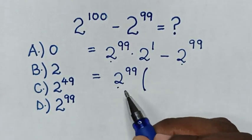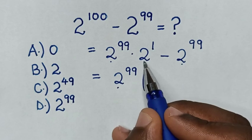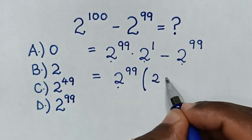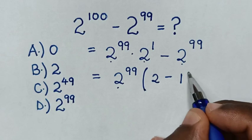This times this divided by this is 2^1, which is the same as 2. Then minus this divided by this is 1.